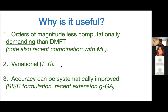Another reason is that this is a variational method, so we have no problem reaching zero temperature, while going to very low temperature with CT-QMC can be problematic in some cases. This makes this method complementary to the MFT. Finally, the accuracy can actually be improved systematically, and I will mention a recent extension called ghost GA.